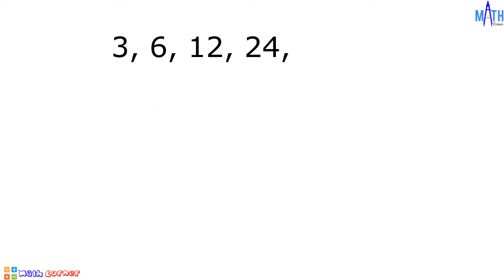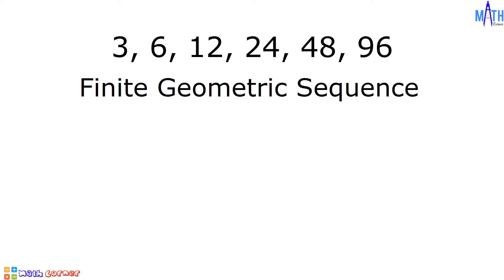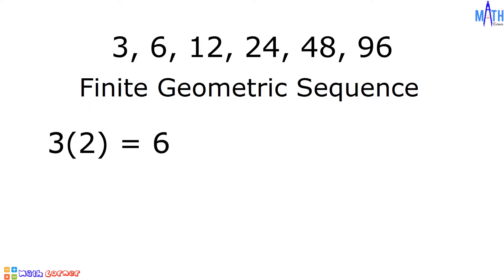One example of geometric sequence is 3, 6, 12, 24, 48, 96. This is an example of a finite geometric sequence since it has a definite number of terms. It means that 96 is the last term and there are no terms after 96. Each term in this sequence is multiplied by 2 to determine the next term.